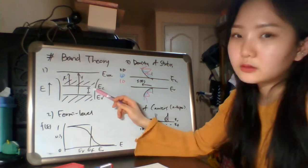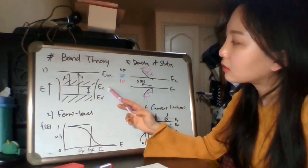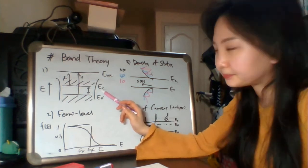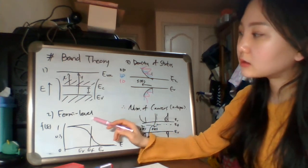The interval between this conduction band and valence band we call energy gap. Second is Fermi level.